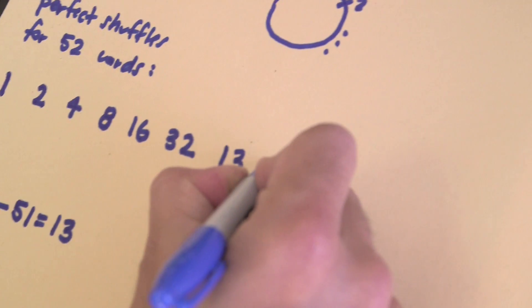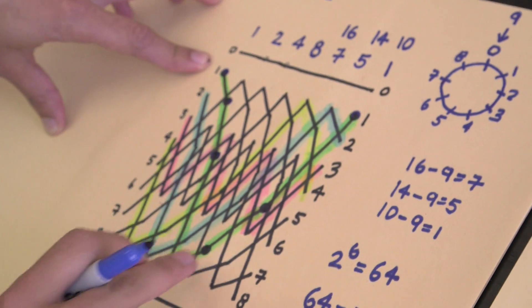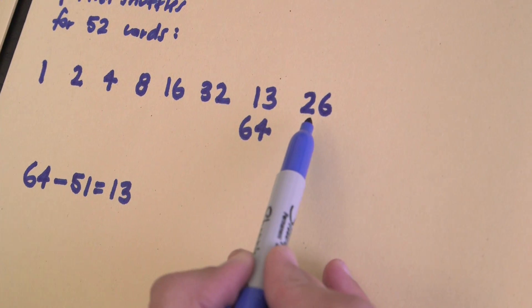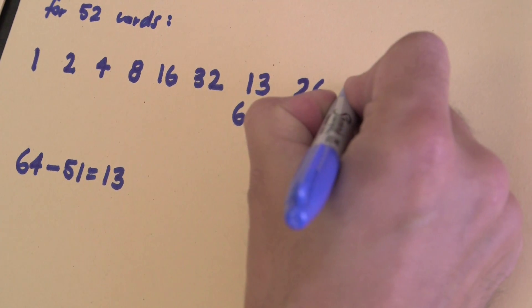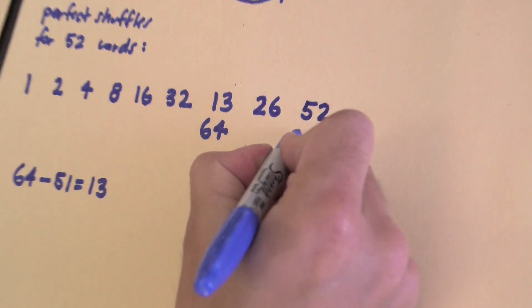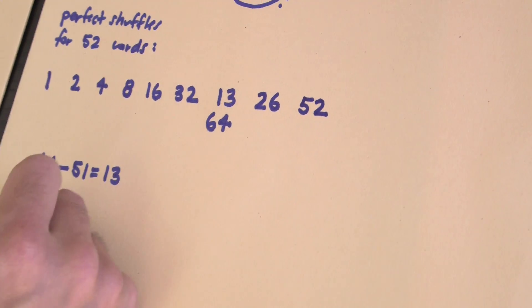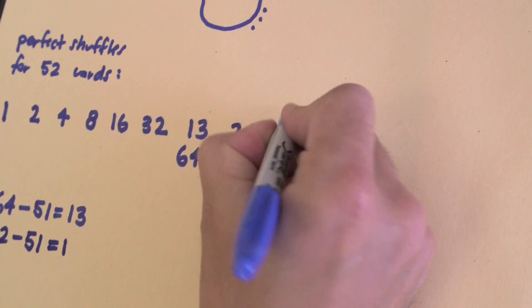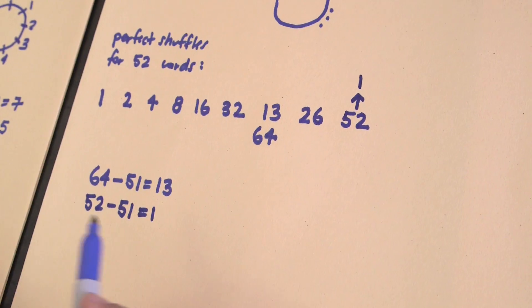Let's do it again. 13 times two is 26 — that's seven shuffles. In the eighth shuffle, 26 times two is 52. And 52 is one spin on the clock plus one hour. So 52 is actually position one — it's back. I need to keep playing this game until I see the number one, and we see it: position one after eight shuffles.